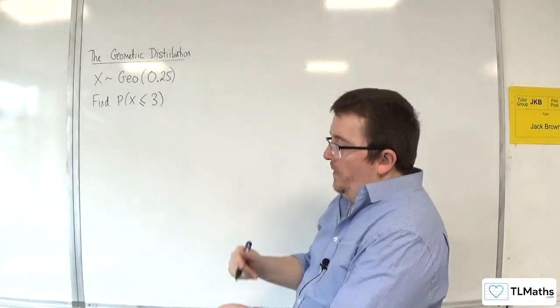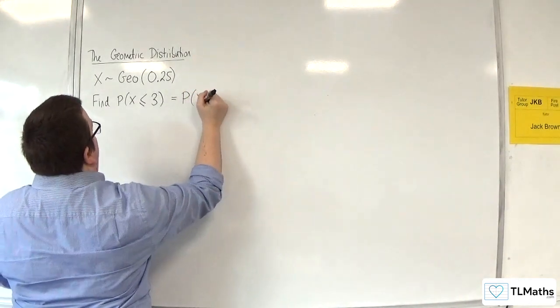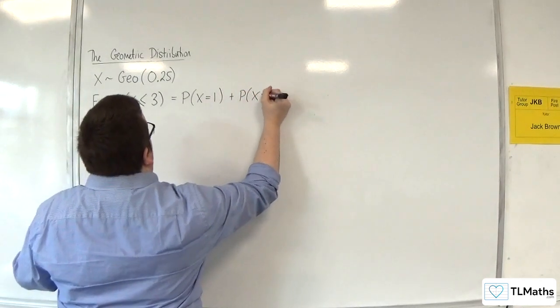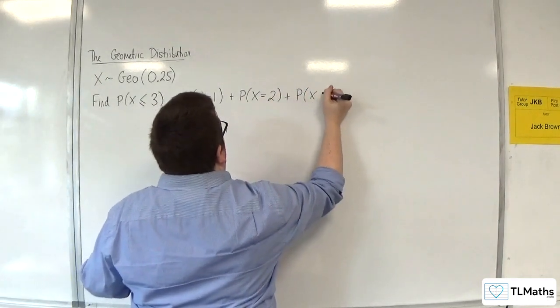So that means I want the probability of winning on the first attempt, plus the probability of winning on the second attempt, plus the probability of winning on the third attempt.